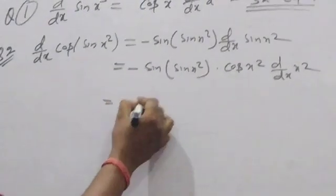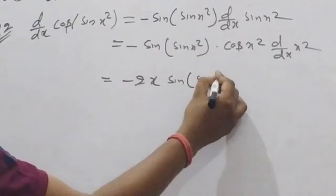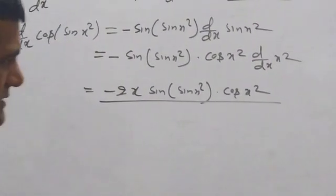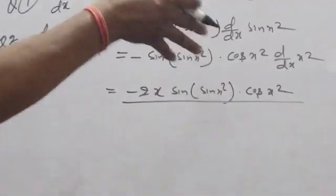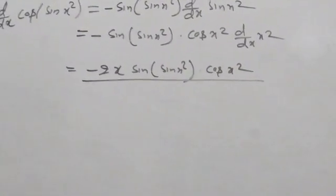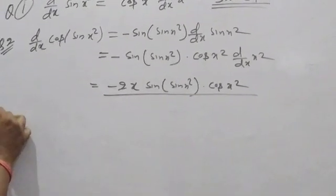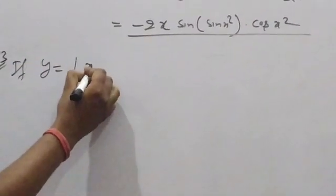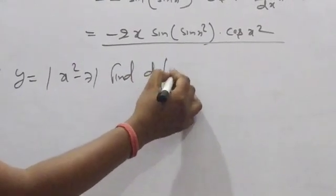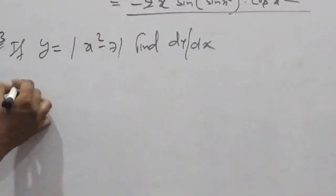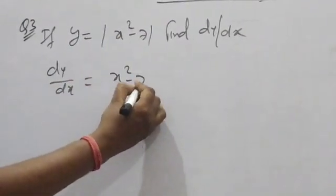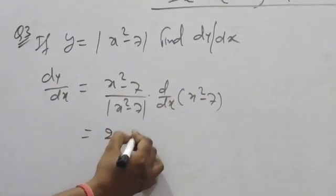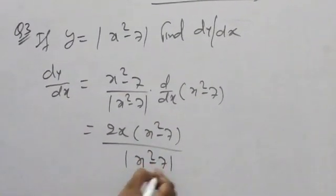So the answer is minus 2x times sin(sin(x²)) times cos(x²). Very simple. Differentiation you have already studied in class 11, so you should know these problems about differentiation. Question number 3: if y = |x² − 7|, then find dy/dx. dy/dx = (x² − 7) / |x² − 7| times d/dx of (x² − 7), which equals 2x(x² − 7) upon |x² − 7|.